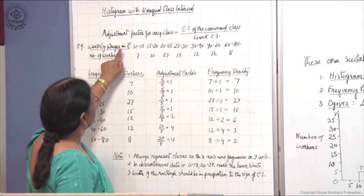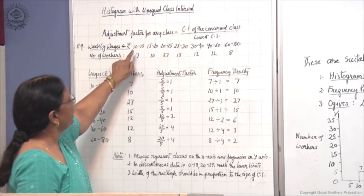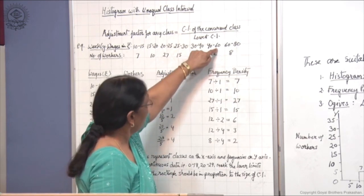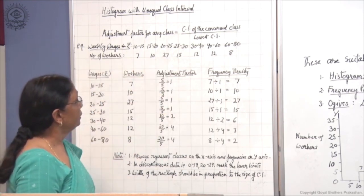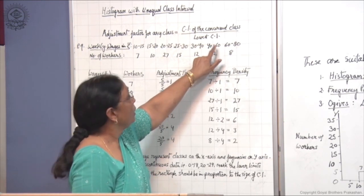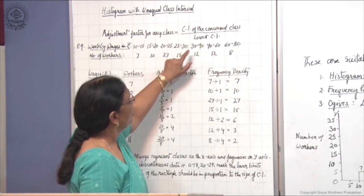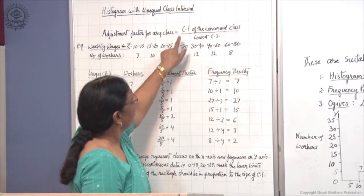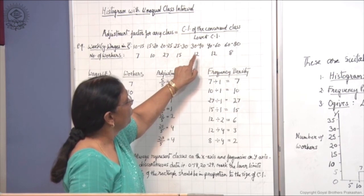Here the example given is weekly wages in rupees and number of workers. Looking at the class intervals carefully: the class interval is 5 for the first several classes, then it becomes 10, then 20, and again 20. The lowest class interval is 5 and the highest is 20. So the formula says: class interval of the concerned class divided by the lowest class interval (which is 5). For 30 to 40, the class interval is 10 and the lowest is 5, giving an adjustment factor of 2, by which the frequency will be divided.